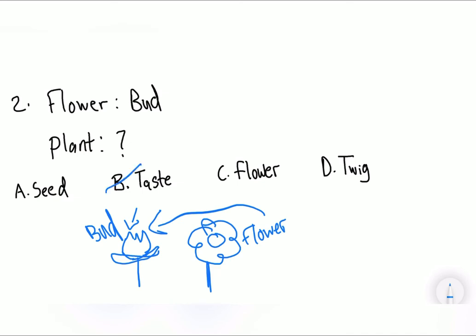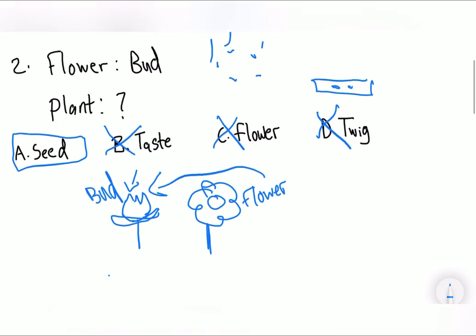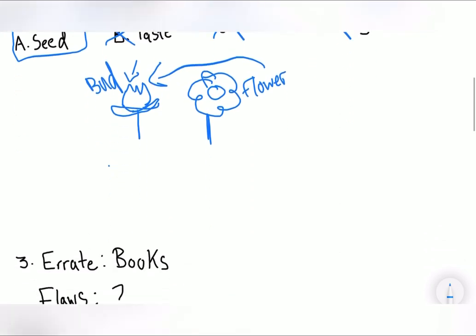So what does a plant come from? Does a plant come from a taste? No, it has nothing to do with that. Does a plant come from a flower? No. Does a plant come from a twig? Twig is basically like a wooden branch. No, it does not come from that. So we can infer that a plant comes from a seed. Because when you plant seeds, you get plants or whatever you plant. Trees, flowers, etc. Now let's go to question number three.